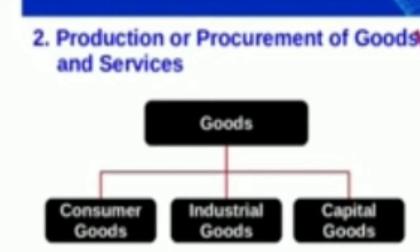Number two: Production or procurement of goods and services. Goods may be either consumer goods or capital goods. Examples of consumer goods are sugar, ghee, pen, notebook, etc. Examples of capital goods are machinery, furniture, etc. Services are the facilities offered to consumers — it may be transportation, banking, electricity, etc.